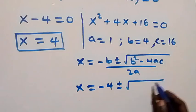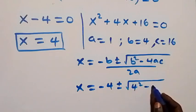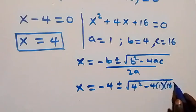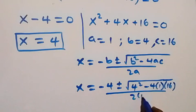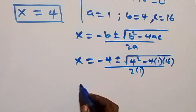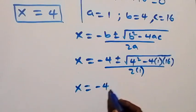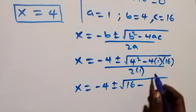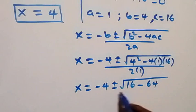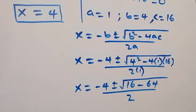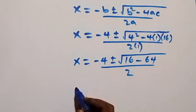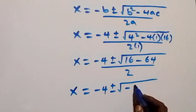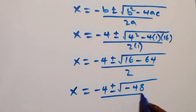Solving that, we get x equals negative 4 plus or minus the square root of 16 minus 64, all over 2. This becomes x equals negative 4 plus or minus the square root of negative 48, all over 2.